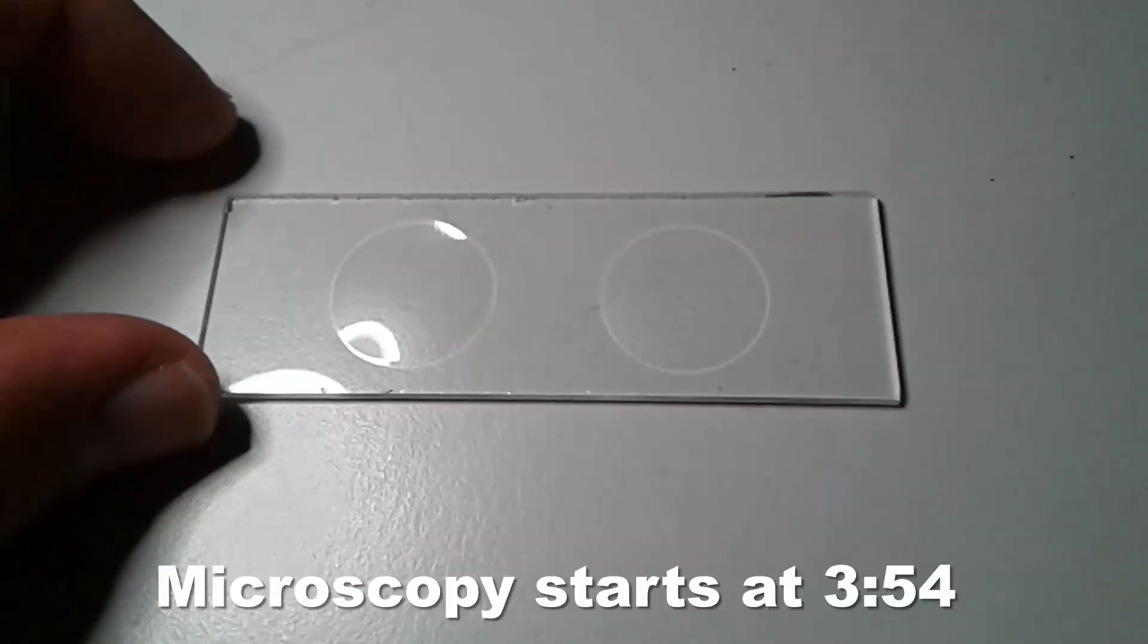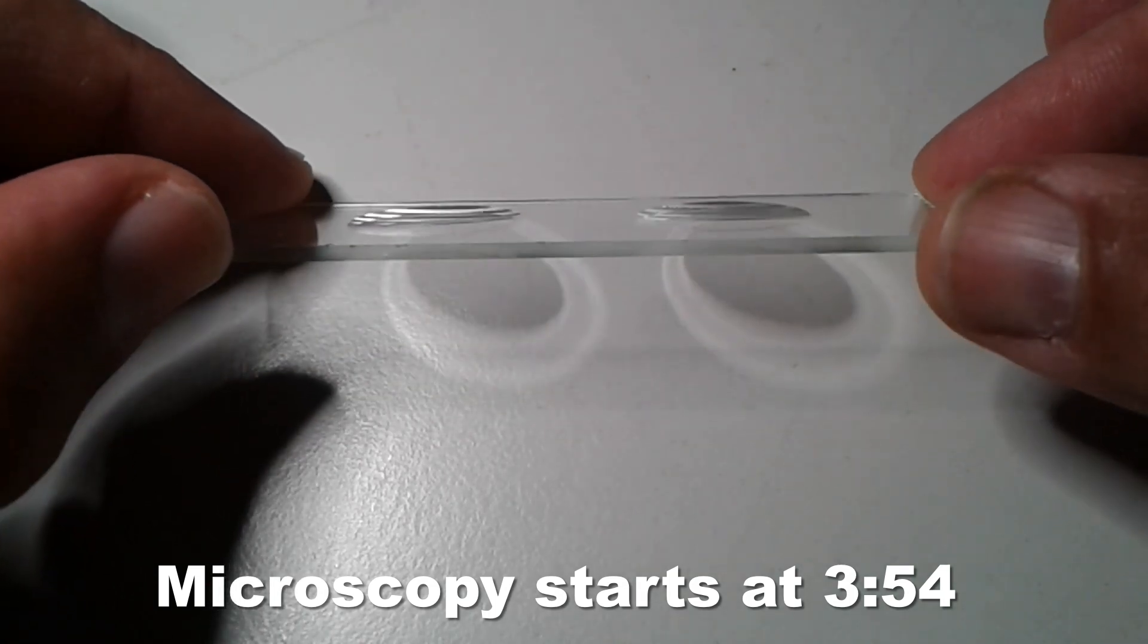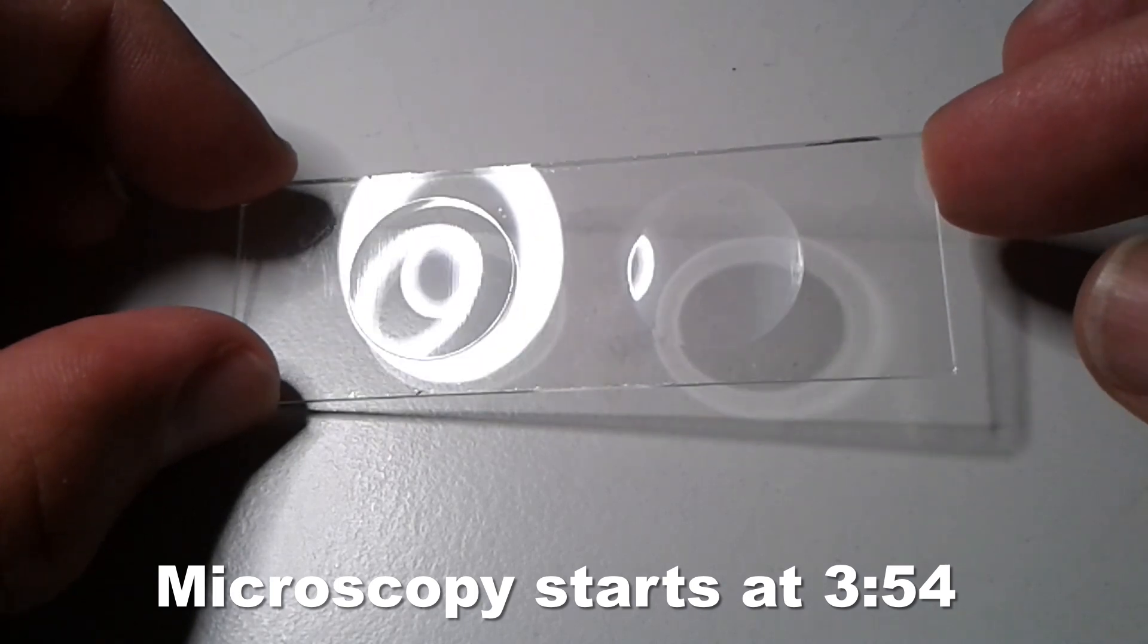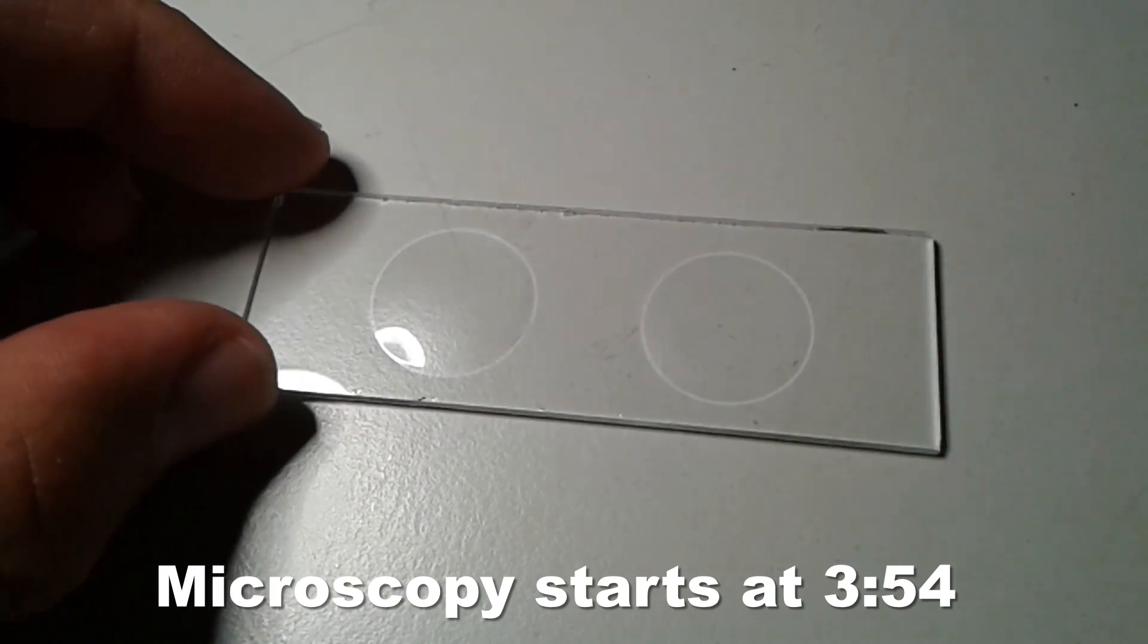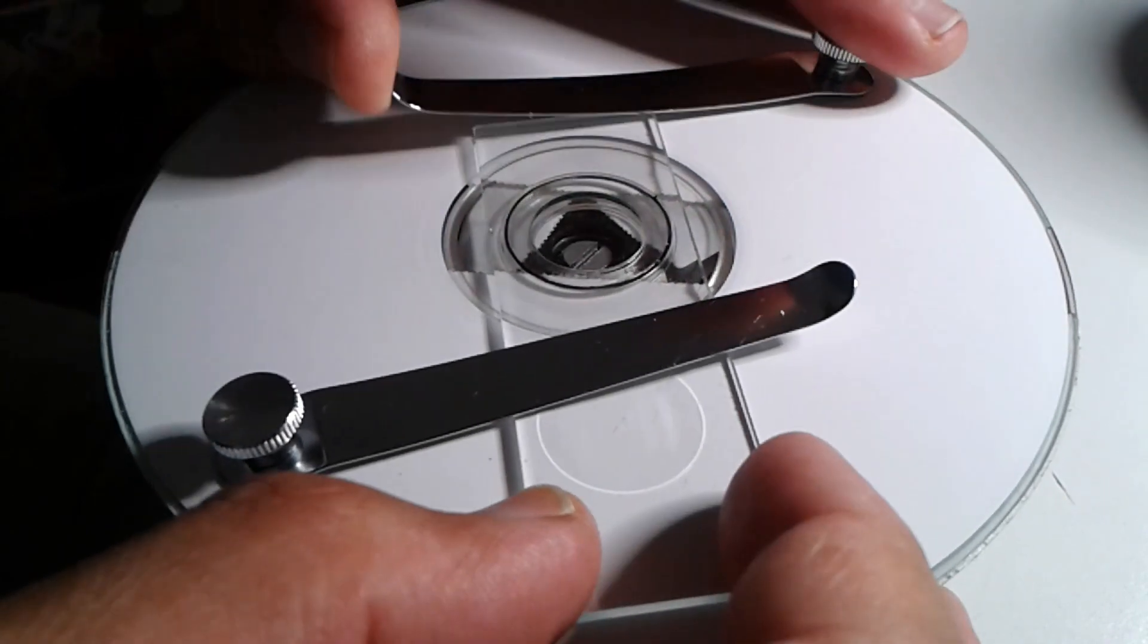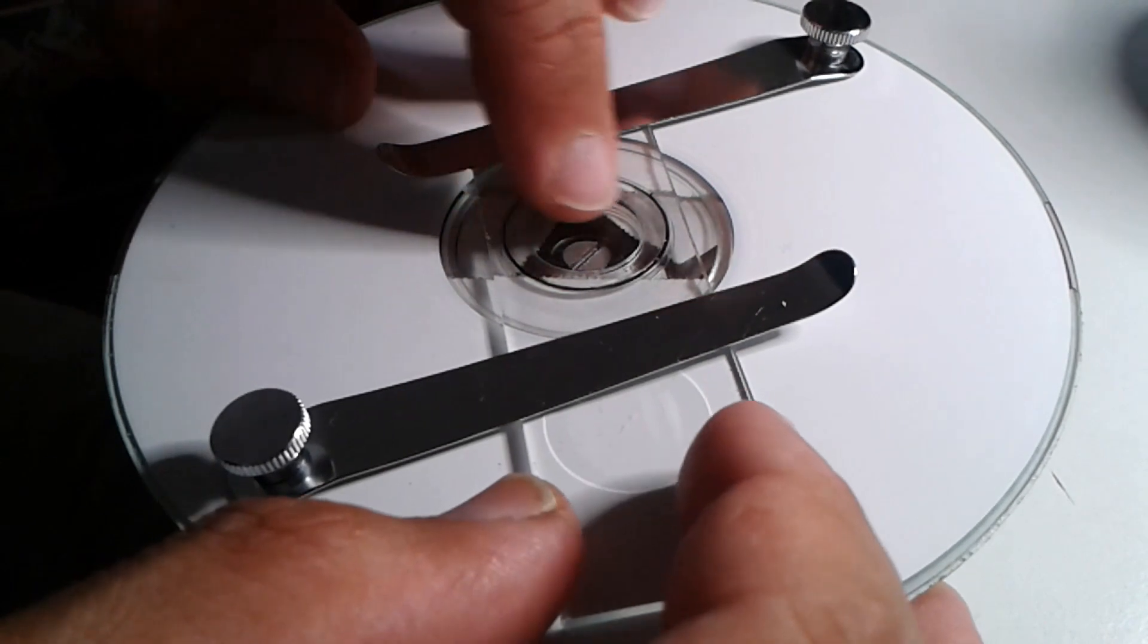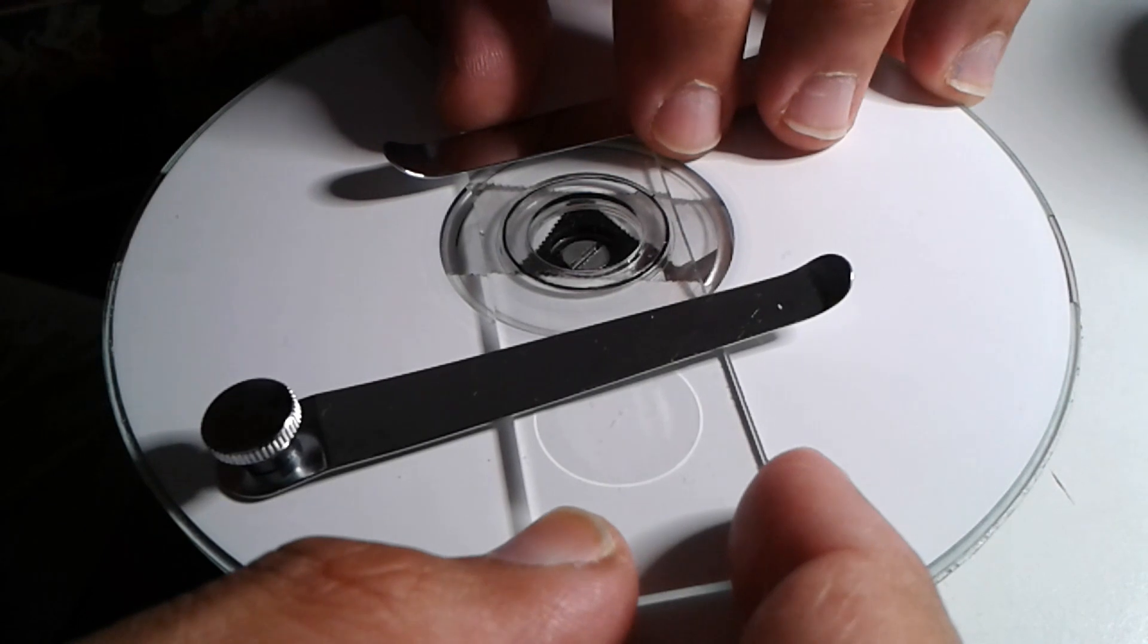Now I'll try something different. I've got a slide here with depressions - they're concave. If you want to jump directly to the microscope, skip ahead to three minutes 54. Using a CD and a fidget spinner, I made myself a slide ringing table. In this depression I'm going to put the pollen and use nail polish to glue the cover glass on top.